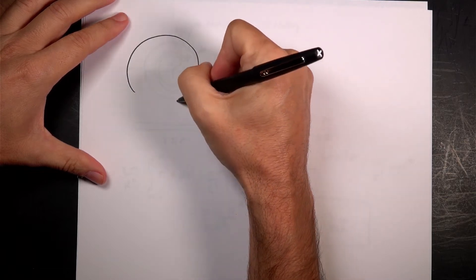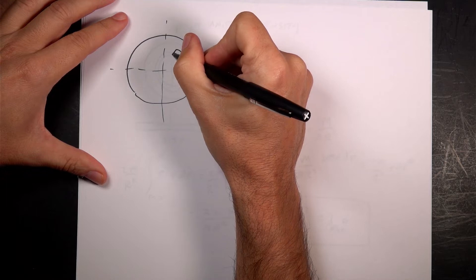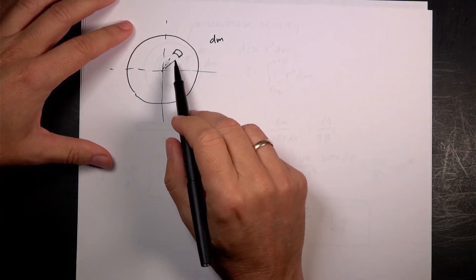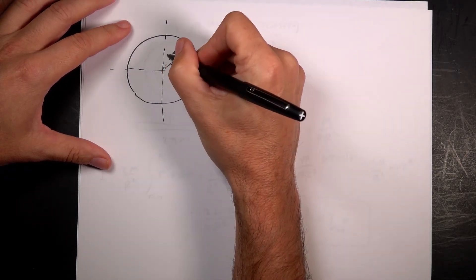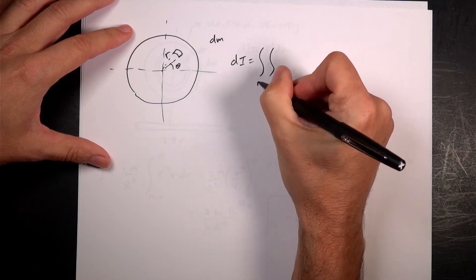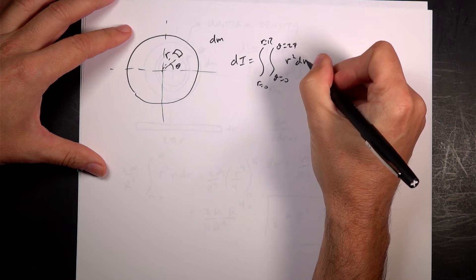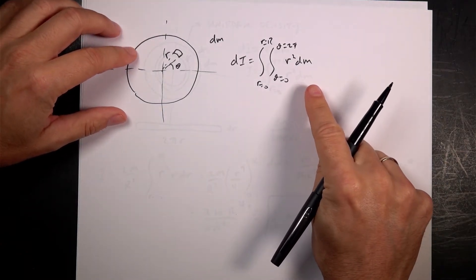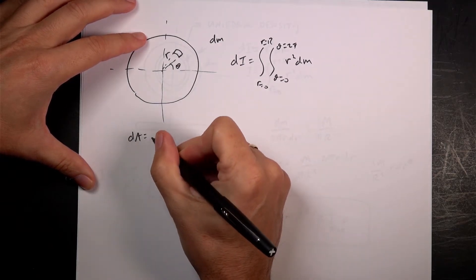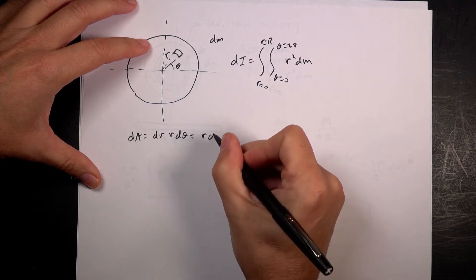Here I'm going to take my disk and pick a small piece dm on it, and do a double integral in polar coordinates. I define that piece at angle theta and distance r. I set up: di equals the double integral from r=0 to R and theta=0 to 2π of r²·dm. I need to find the area element in polar coordinates: dA equals dr times r·dθ, so dA = r·dr·dθ.